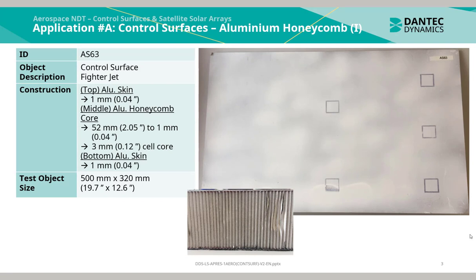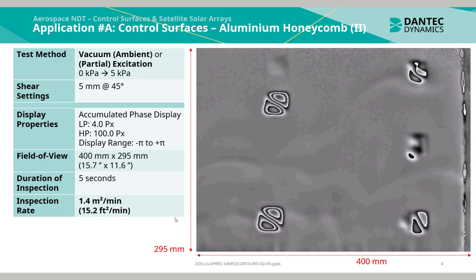The test object size is 500 mm by 320 mm and includes five marked indications of known damage. Using either vacuum ambient or vacuum partial excitation with a five kilopascal pressure jump, the duration of this inspection took approximately five seconds, yielding an inspection rate of 1.4 m² per minute.